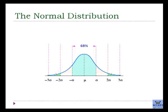There are certain probabilities that arise from the normal distribution. If we start at the mean in the center and go out one standard deviation above and below, this covers about 68% of the observations. If we go out to two standard deviations above and below the mean, this covers 95% of the observations. If we go out to three standard deviations above and below the mean, this covers 99.7% of the observations.